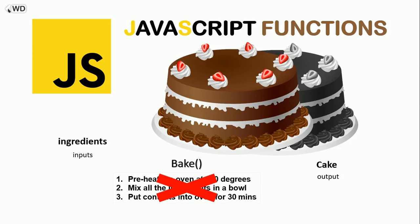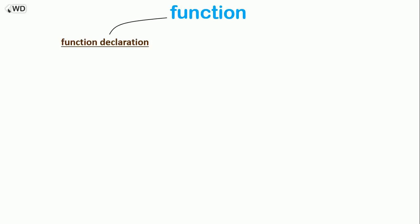Now let's see how to create a function in JavaScript. There are three ways: the first is the function declaration, the second is the function expression, and the third is the function constructor — we won't go through that because you don't really have to use it.